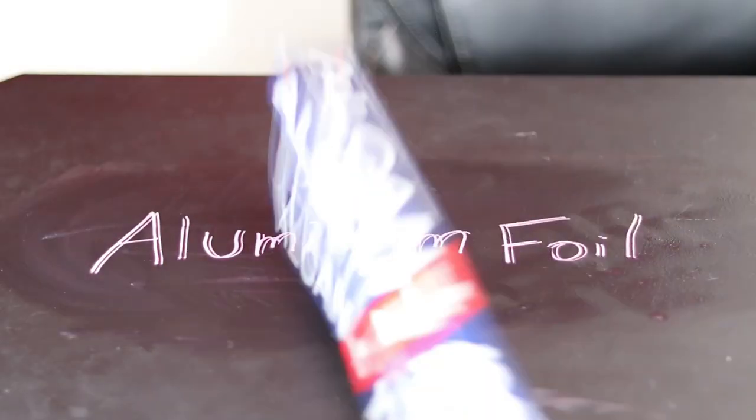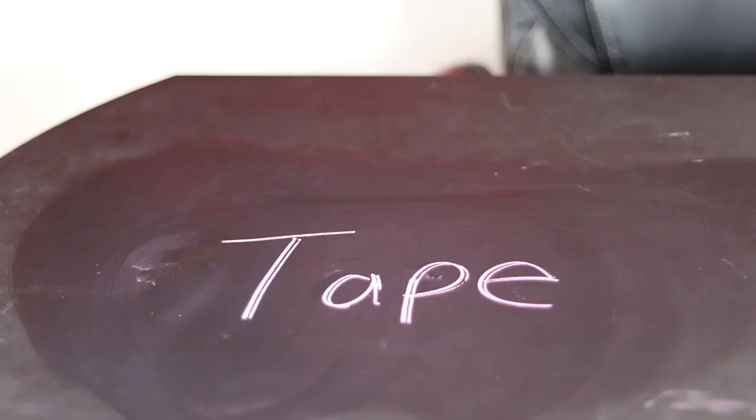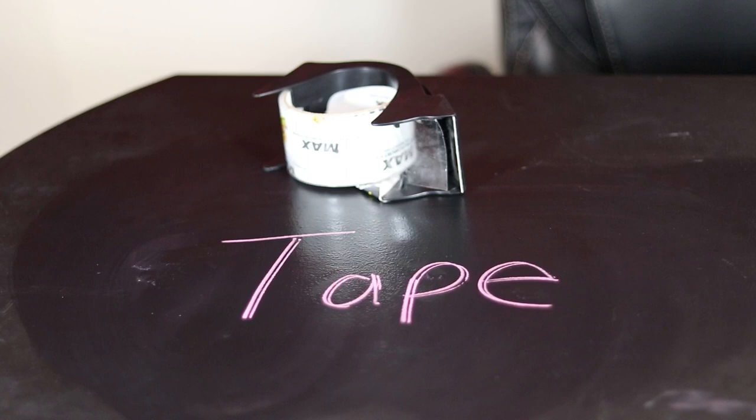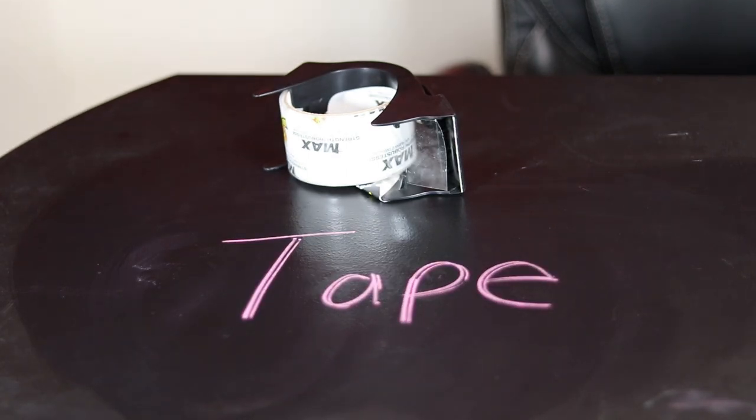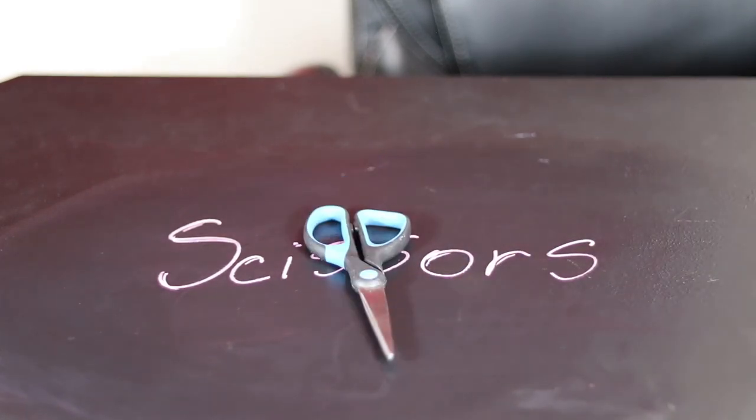Next up we're gonna need some household aluminum foil and this is gonna be used to line the inside of our icebox and essentially reflects the UV light. To hold down the aluminum foil as the lining for the icebox we're gonna need some tape. You don't need a specific quality but the stronger is probably gonna be better. Next we just need some scissors to cut off some excess aluminum foil and some extra parts of the box we don't need.